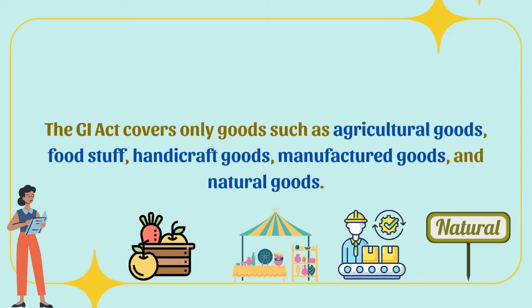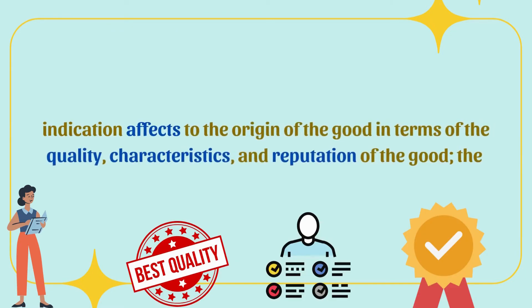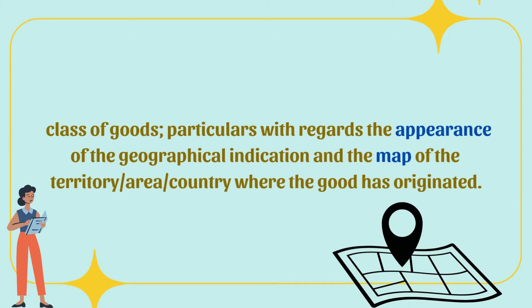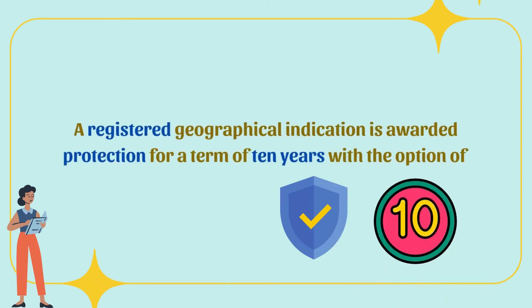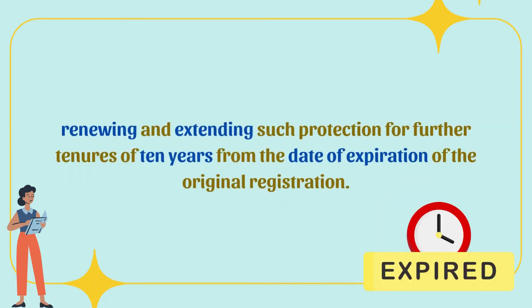The GI Act covers only goods such as agricultural goods, foodstuff, handicraft goods, manufactured goods, and natural goods. An application for registering a good under the GI Act requires a statement explaining how the geographical indication affects the origin of the good in terms of quality, characteristics, and reputation; the class of goods; particulars with regard to the appearance of the geographical indication; and the map of the territory or country where the good has originated. A registered geographical indication is awarded protection for a term of 10 years, with the option of renewing for further periods of 10 years.